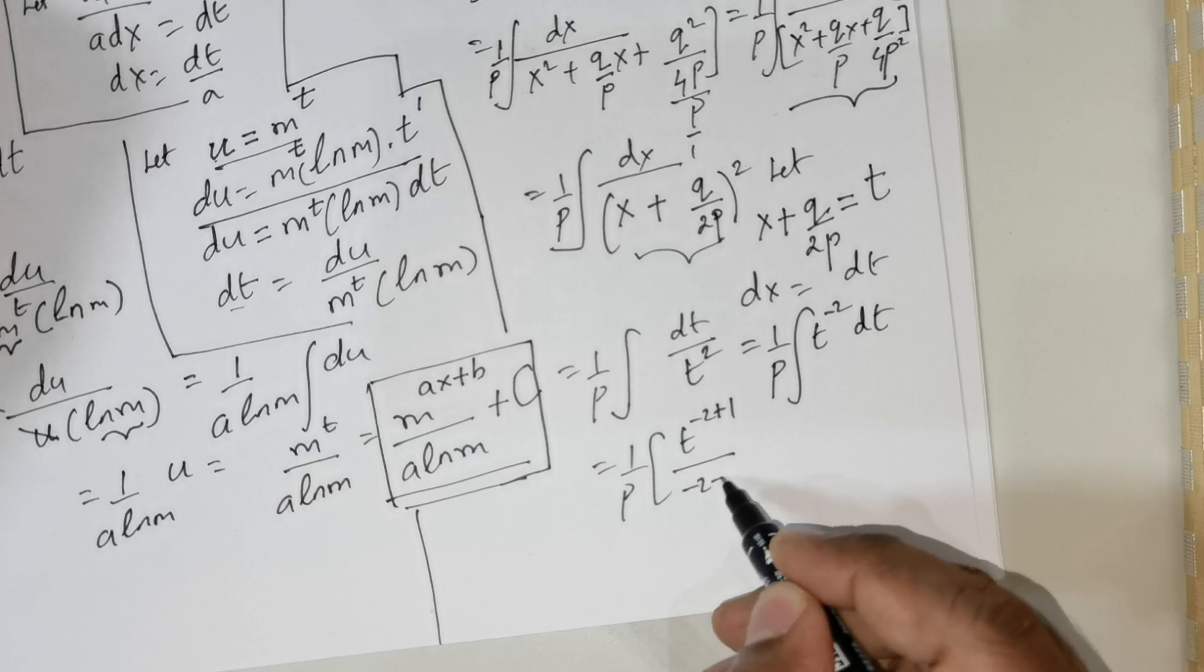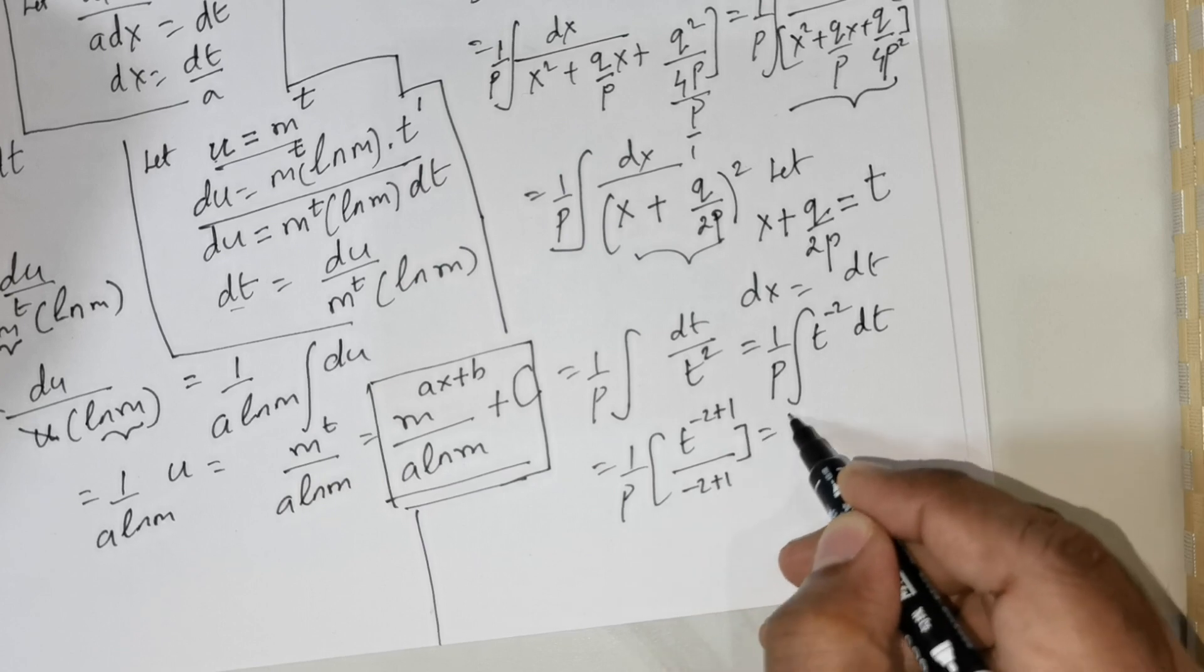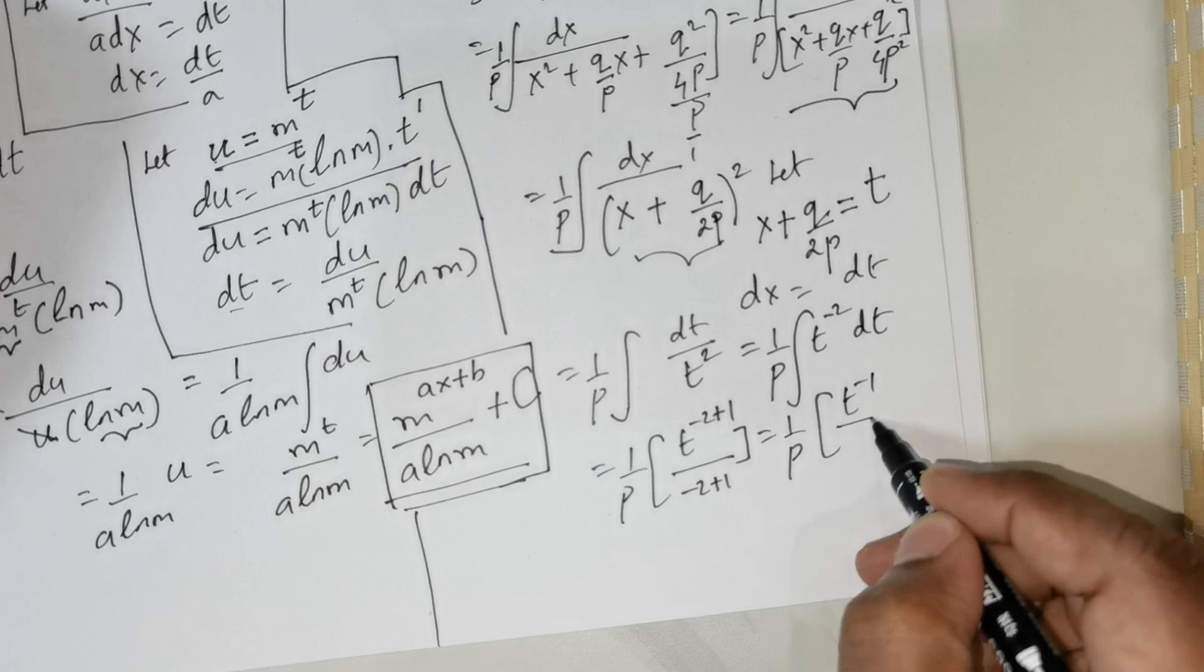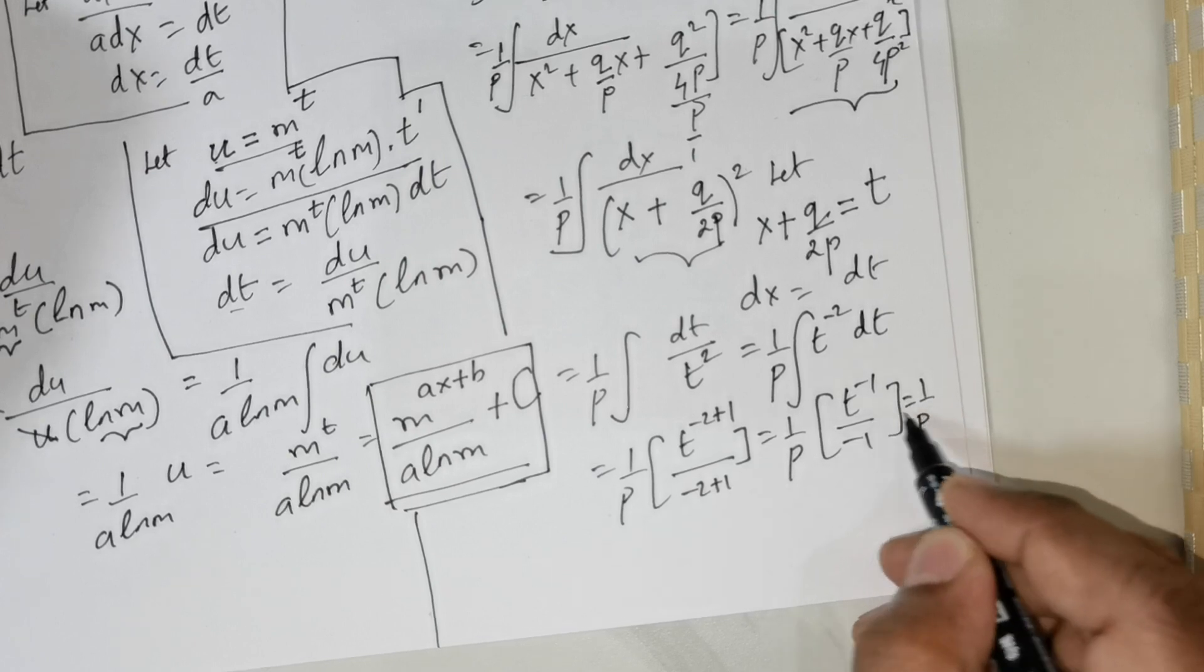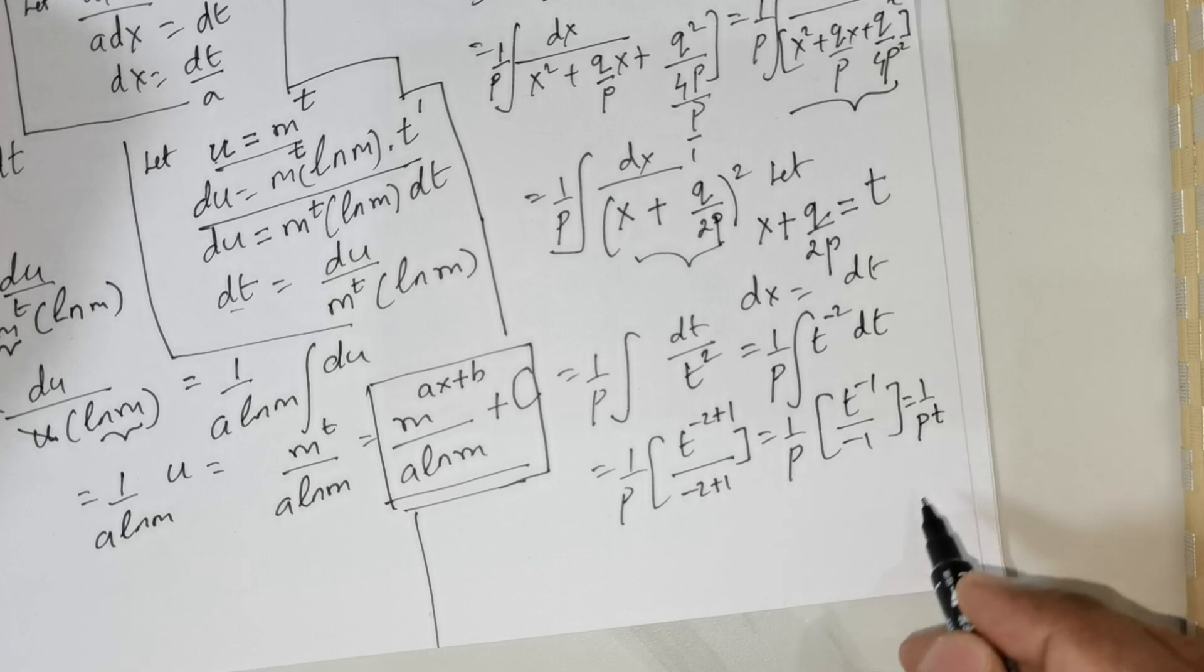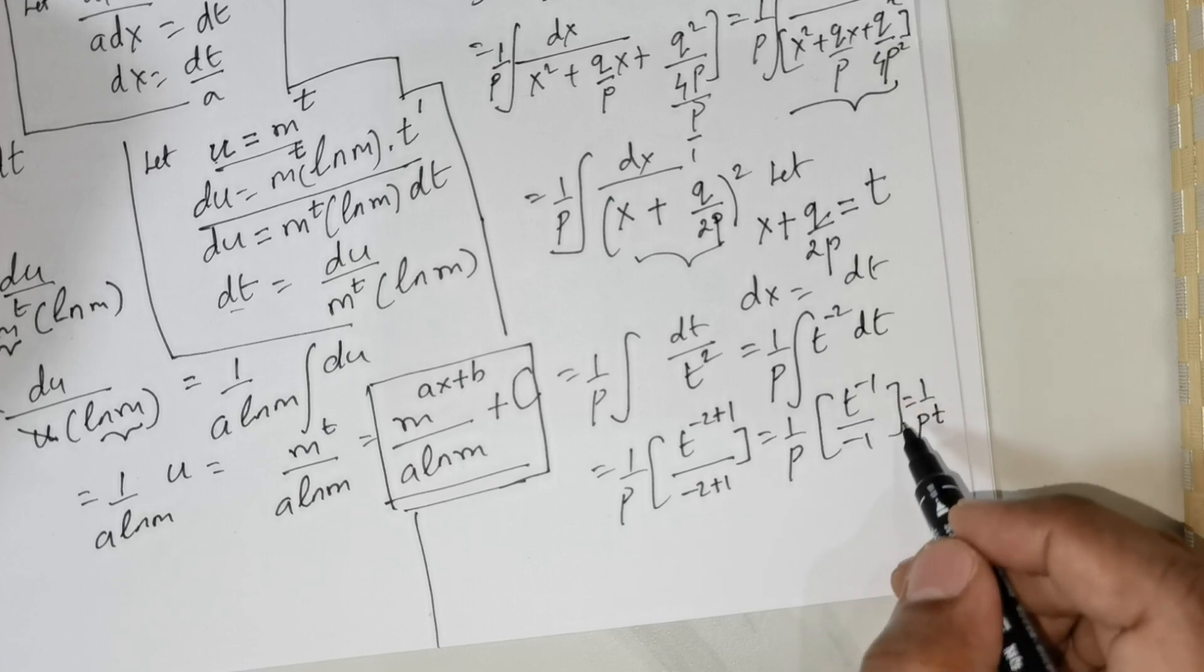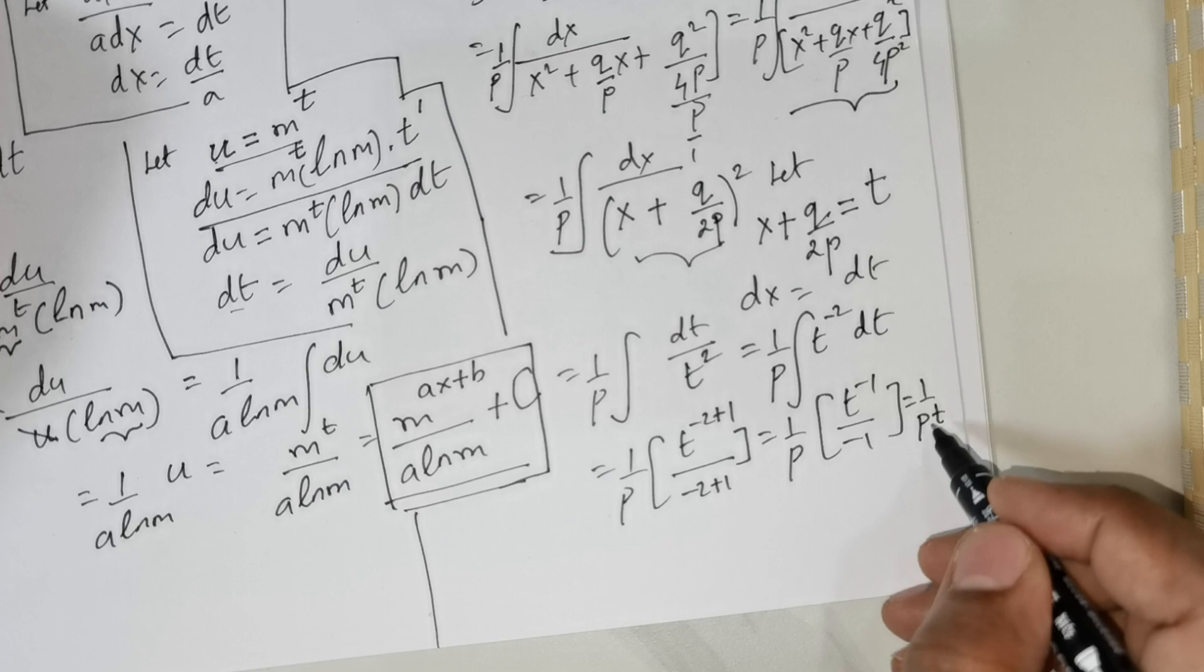This is straightforward. This is going to give me t raised to the power of negative 2 plus 1 divided by negative 2 plus 1, which equals 1 over p times t raised to the power of negative 1 divided by negative 1. Which equals 1 over p. You push the t down, you get a positive t, but there's a negative sign there.